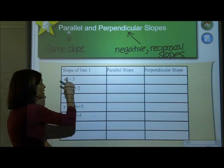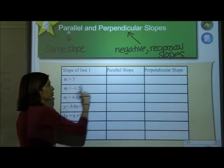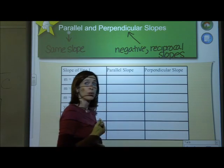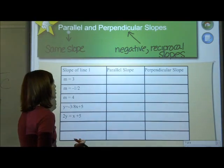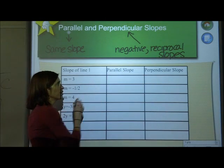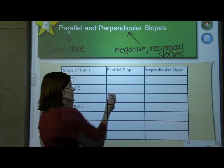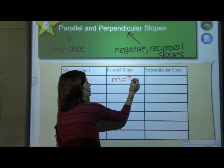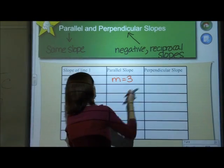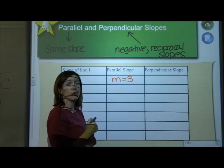So negative reciprocal slopes. So let's just see if we can identify in this chart. Now I do want you to write slope of the line, and I want you to write parallel slope and make a line perpendicular slope. I want to make sure that you guys know how to do this. So if the slope of line 1 is 3, then a slope that's parallel to it will also have a slope of 3, because parallel lines have the same slope.